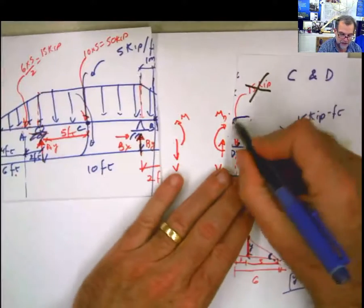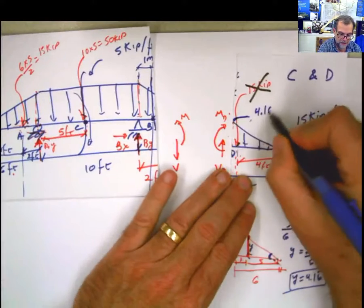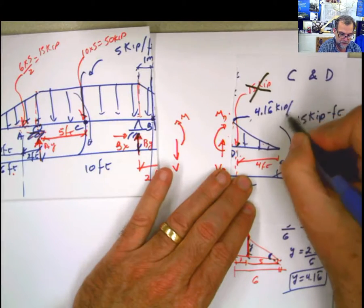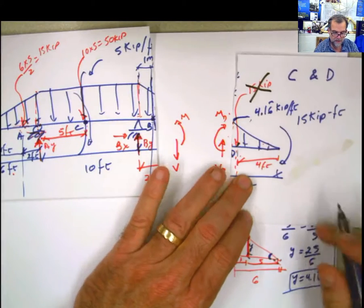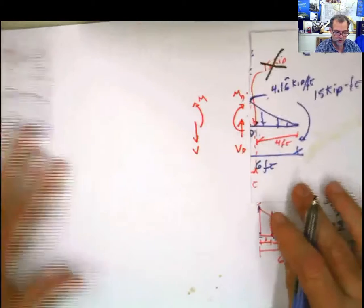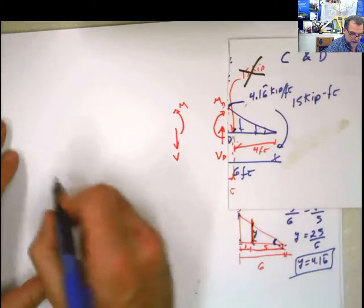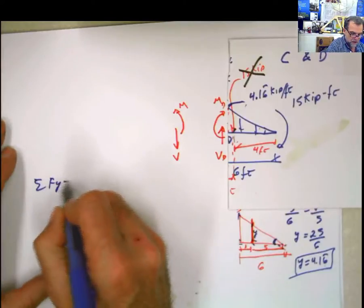Now you go back here. And you say, OK, this height is 4.16 periodic kip per foot. Once you have that, basically your problem is solved. Because you come here and you say, OK, let's do this part then. And let's say, summation of forces in y equals 0.